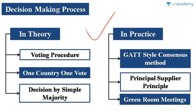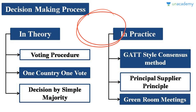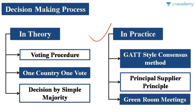In practice, the decision-making process of WTO is quite different and is often criticized. The process is quite informal. WTO uses the consensus method for taking decisions — this method was earlier used during GATT negotiations and was carried over from GATT to WTO. Most decisions are taken by consensus, where all negotiating parties must agree. This consensus method takes place in small closed-door meetings called green room meetings, where very few countries are invited.